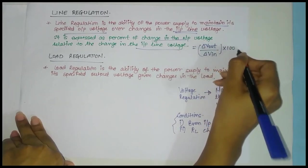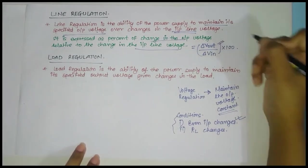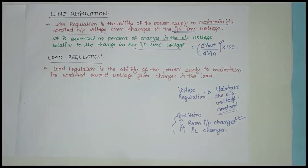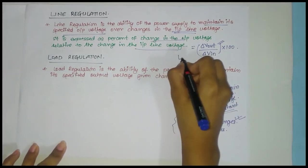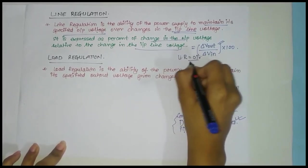This is the formula for line regulation. Now ideally, what we want is that delta V-out — that is, the change in output voltage even though the input voltage is changing — should be zero. So ideally, the value of line regulation should be equal to 0 percent. This is the ideal value we want.